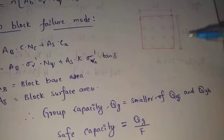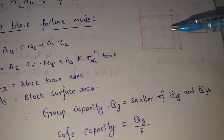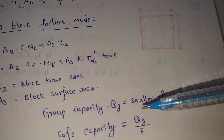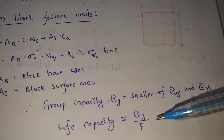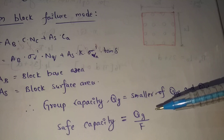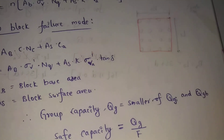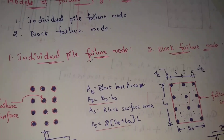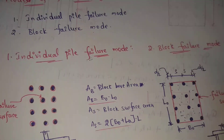Group capacity Qg equals the smaller of Qgi (individual pile failure mode group capacity) and Qgb (block failure mode group capacity). Safe capacity equals Qg divided by F, where F is the factor of safety. We must use both failure mode formulas and take the smaller value.